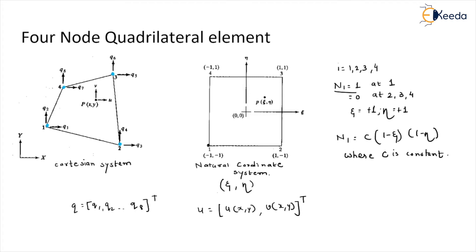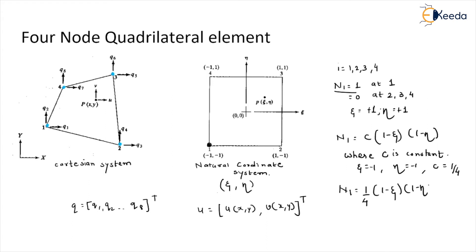The constant is determined from the condition that N1 equals 1 at node number 1. At node number 1, both eta and zeta are equal to minus 1, as you can see here. Putting all these values into the equation, the constant c is equal to 1/4. So putting all values of c, zeta, and eta, we have the equation N1 equals (1/4)(1 minus zeta)(1 minus eta).